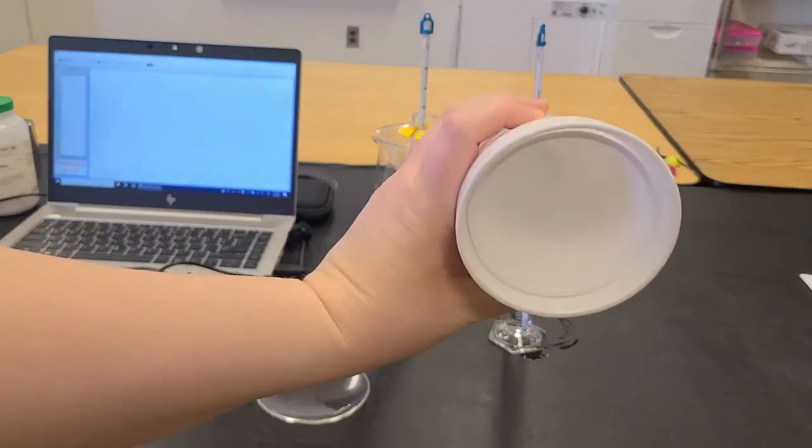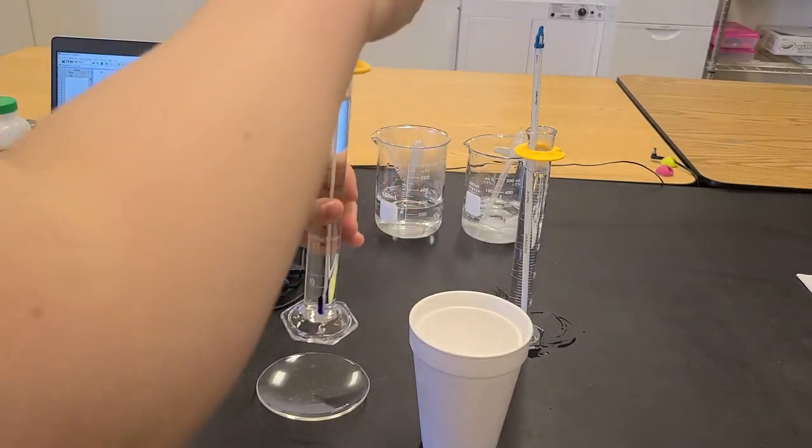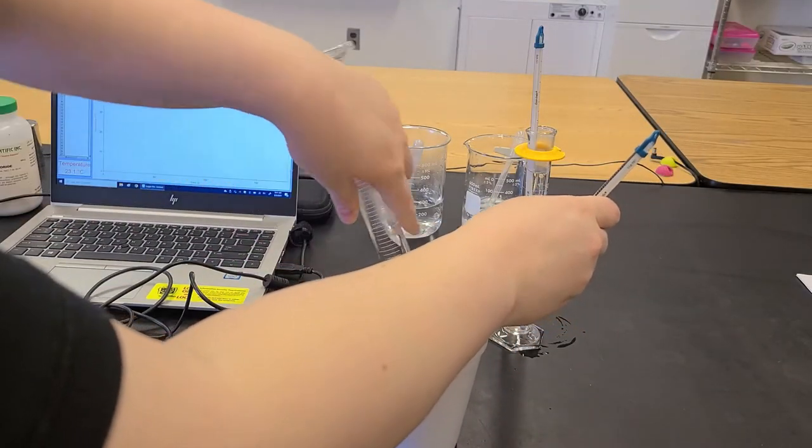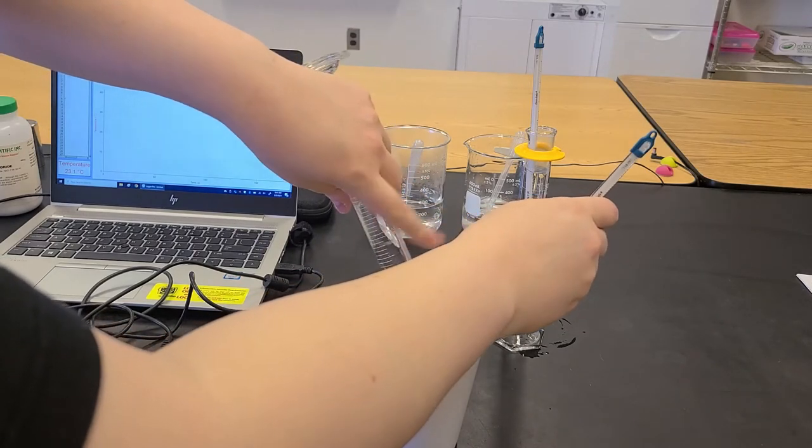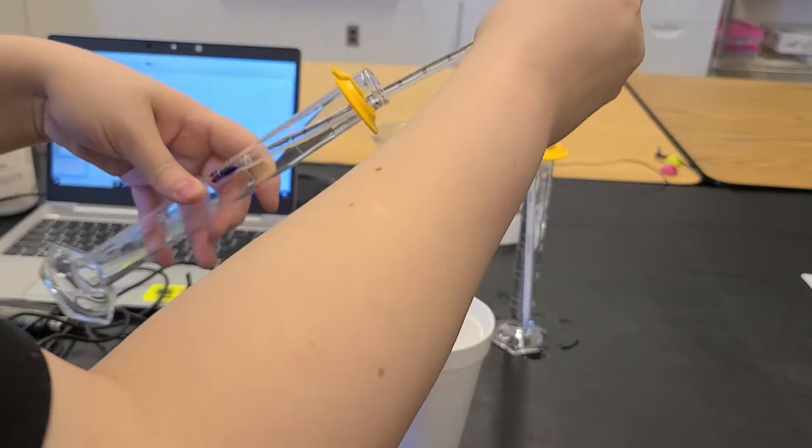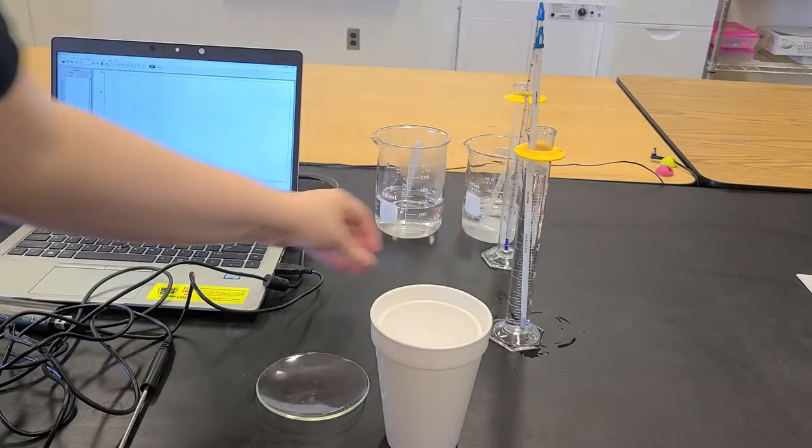So what I'm going to do next is I'm going to combine these solutions in my calorimeter. So first I'm going to just add my cold water to the calorimeter. And I want to note that initial temperature here.